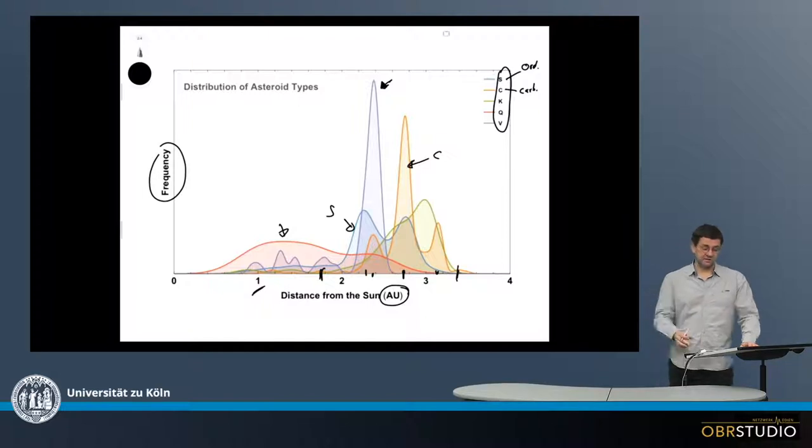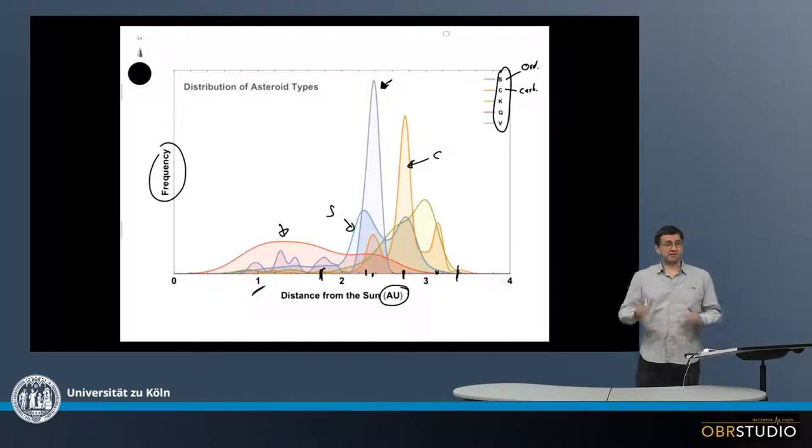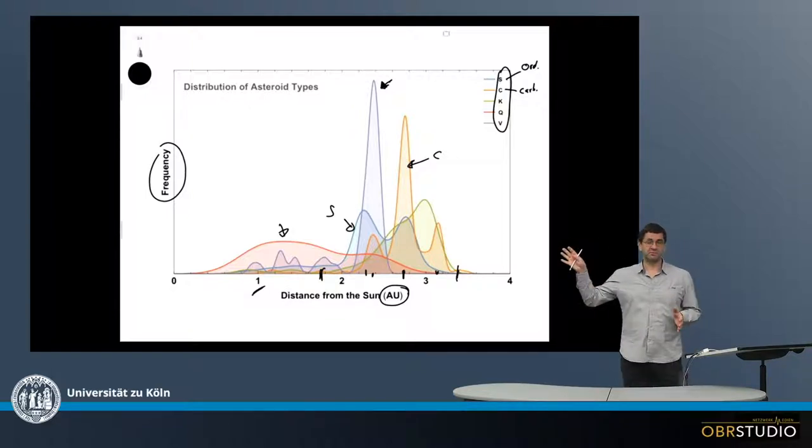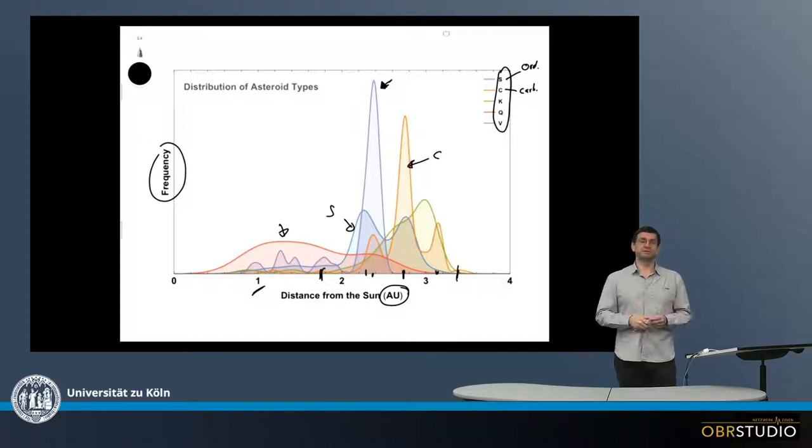This observation is not yet fully understood. One might expect more heterogeneous distributions, but it's important to know about these differences among the various asteroid classes, which we still need to better understand and explain.